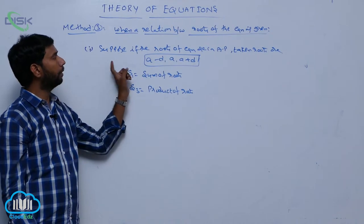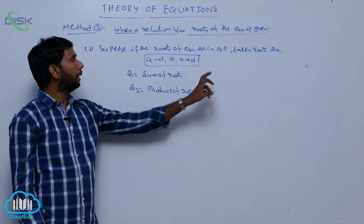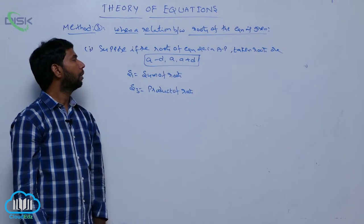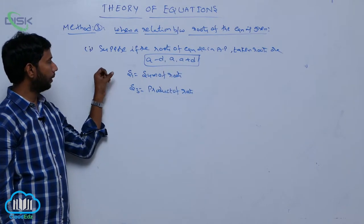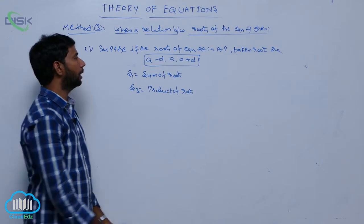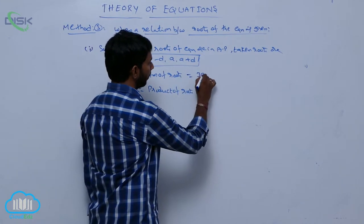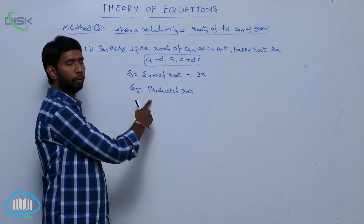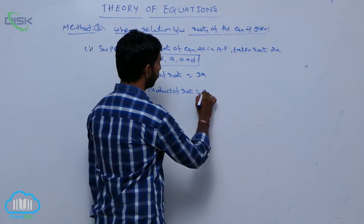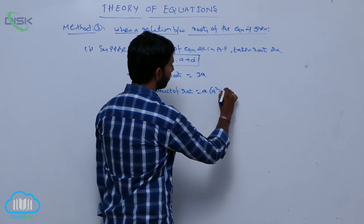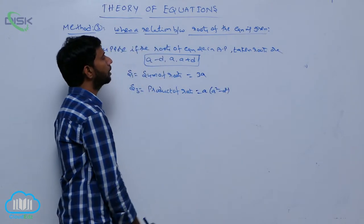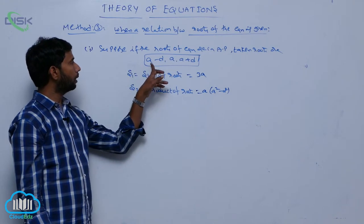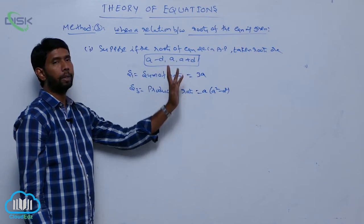If the roots of the equation are in AP, take the roots as A minus D, A, A plus D. For finding the roots, first find S1 to get the value of A. Then find S3, the product of roots, which equals A(A² minus D²). Using these conditions, we find the values of A and D, then substitute in the roots A minus D, A, A plus D.